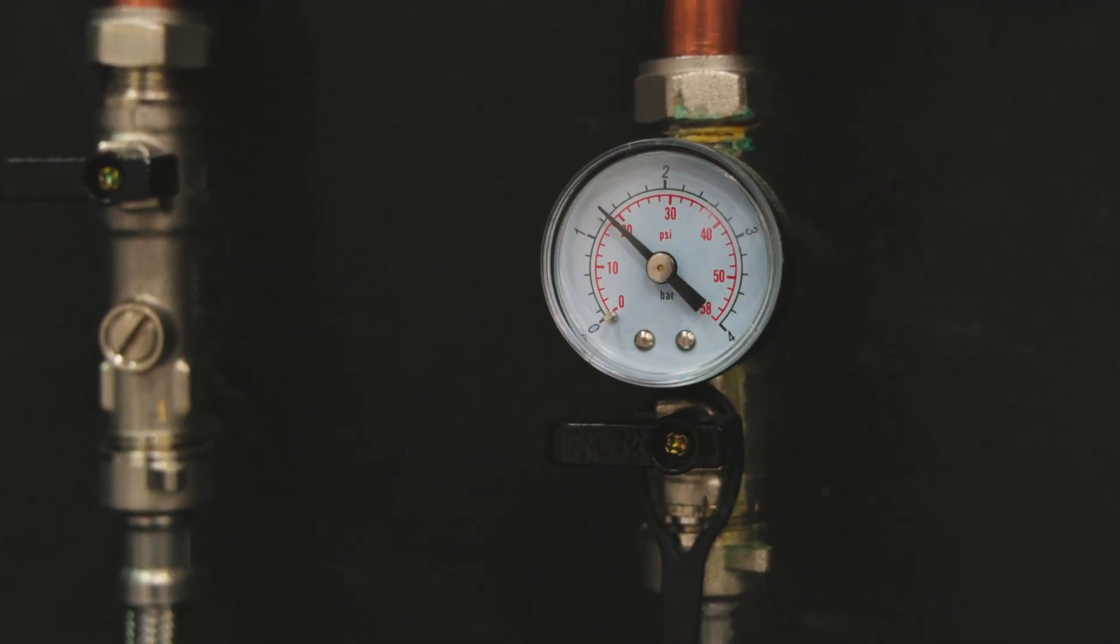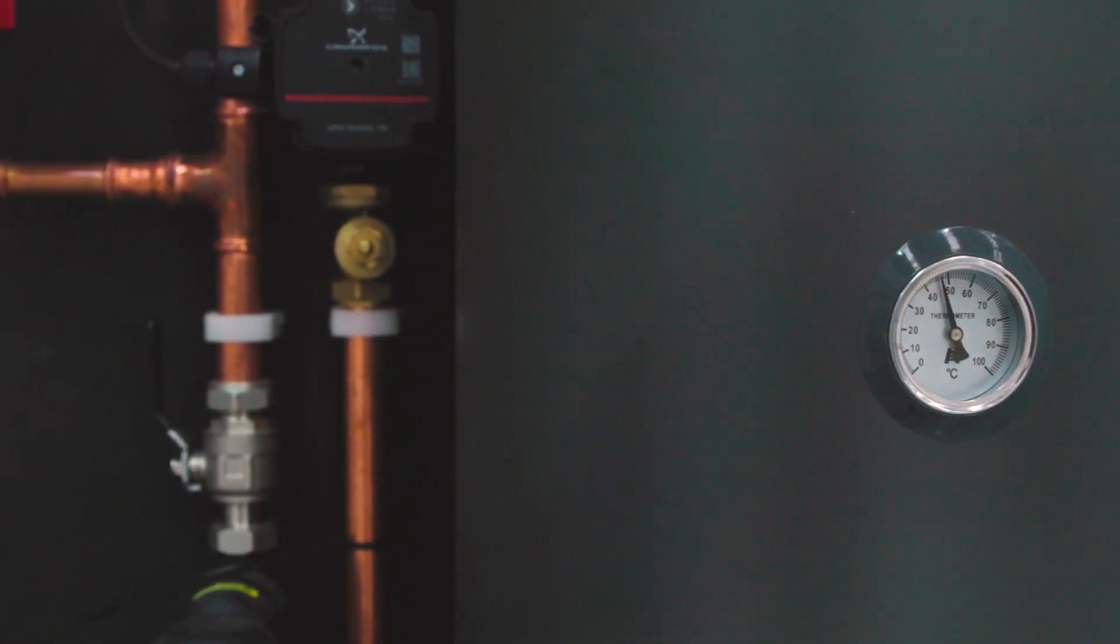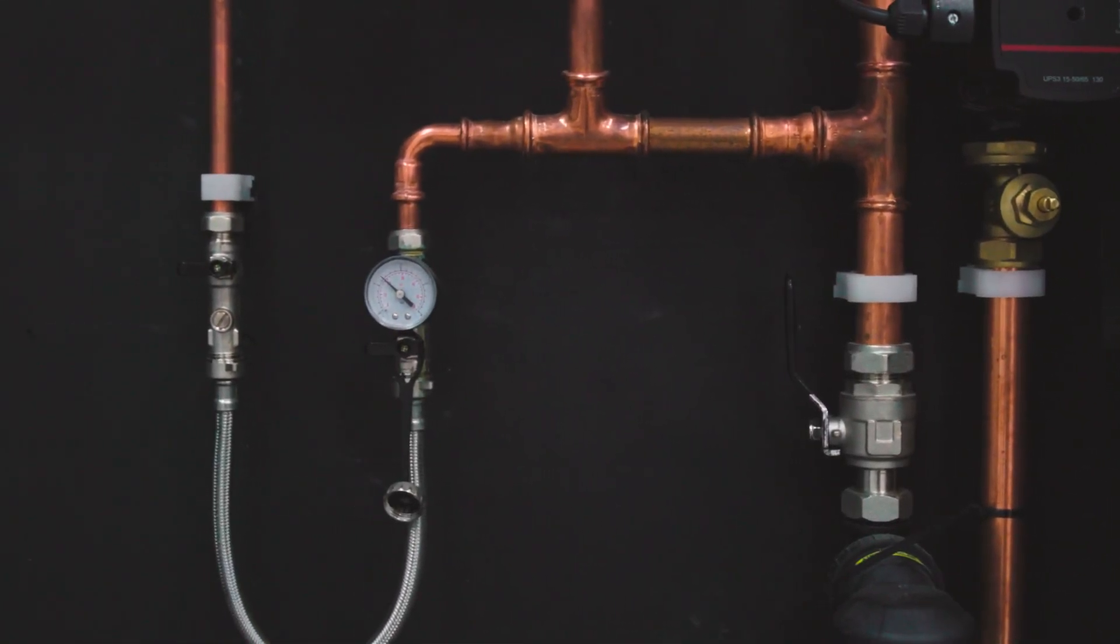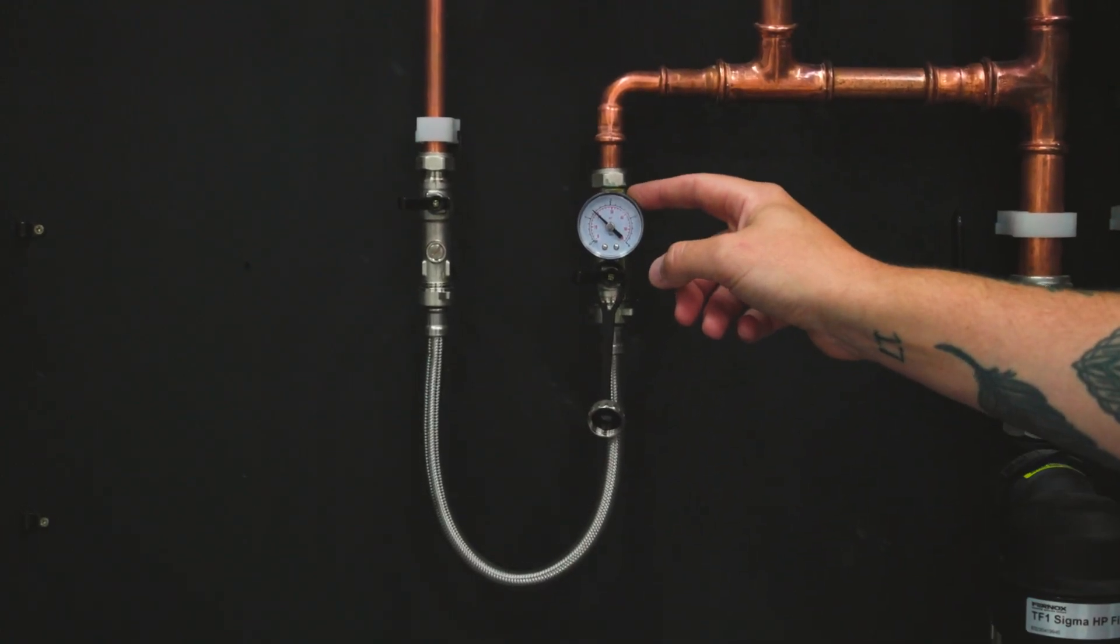Once it's cooled down, find the pressure gauge which should be near the indoor unit or next to the external filling loop. What we're showing you here is the filling loop gauge.